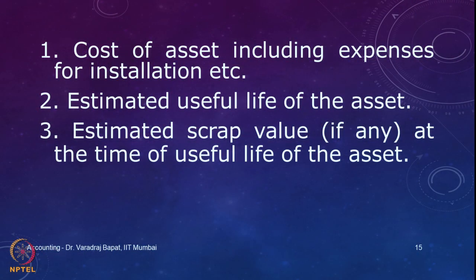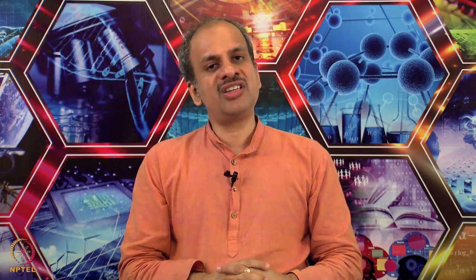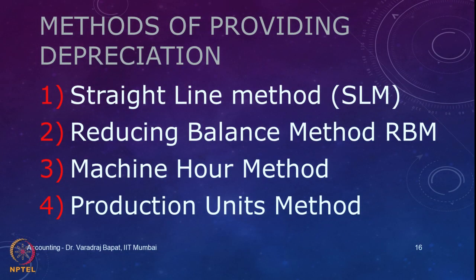We went into the discussion on the methods of depreciation. To calculate any depreciation, we need three important estimates. The first one is mostly actual — that is the cost of the asset. Then the estimate of useful life and the estimate of scrap value. Based on these three we calculate annual depreciation for each tangible and intangible asset. There are several methods but four methods we are going to discuss in this course, the first two being the most important: straight line and reducing balance.